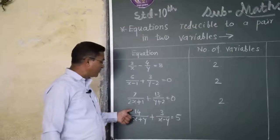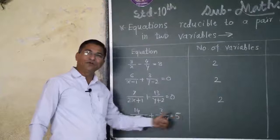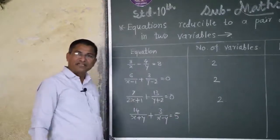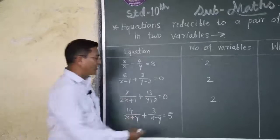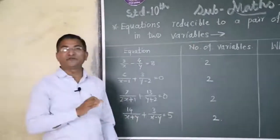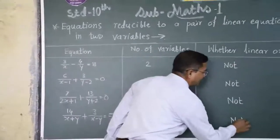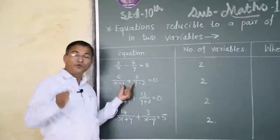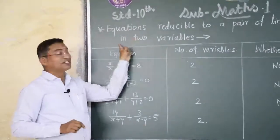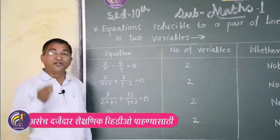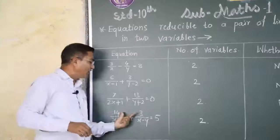Now, the last example: 14 upon x plus 1, plus 3 upon x minus 1, is equal to 5. How many variables are here? There are two variables. But it is not a linear equation in two variables. In this way, these equations have two variables but are not linear equations — we can reduce them.